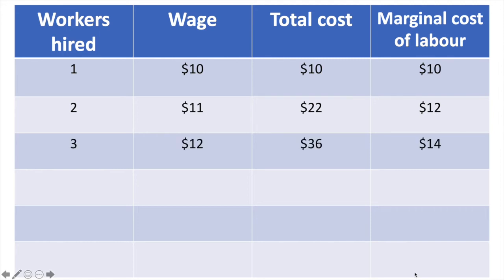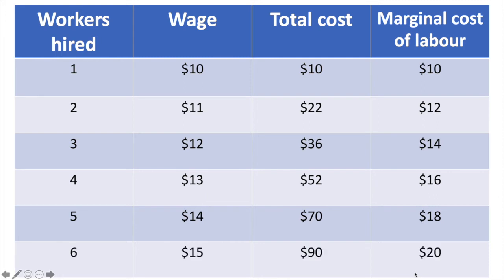To hire a third worker, they need to offer $12 and also go back and pay the second and first employee the new hire wage, so their total cost of labour is $36 and their marginal cost is $14. To attract the fourth worker, the firm needs to offer $13 and similarly pay that to all previous workers, bringing their total cost to $52 and their marginal cost to $16. To bring in a fifth worker, the firm must offer $14; the total cost is $70 and the marginal cost increases to $18. The sixth worker requires $15, bringing the total cost to $90 and resulting in a marginal cost of $20.